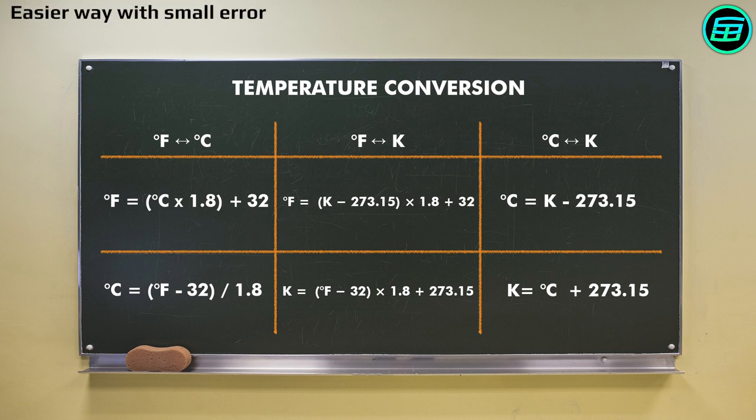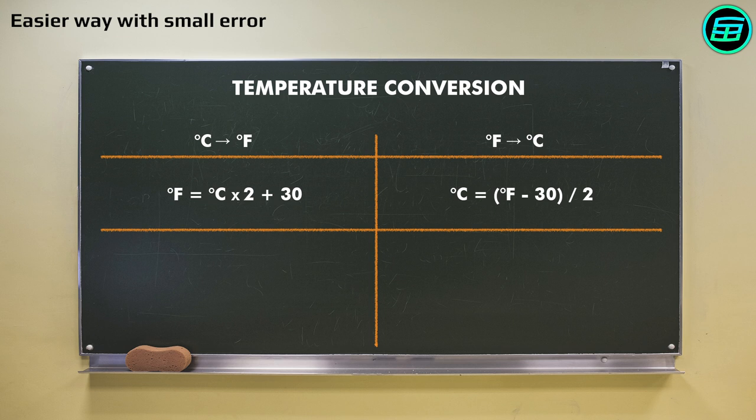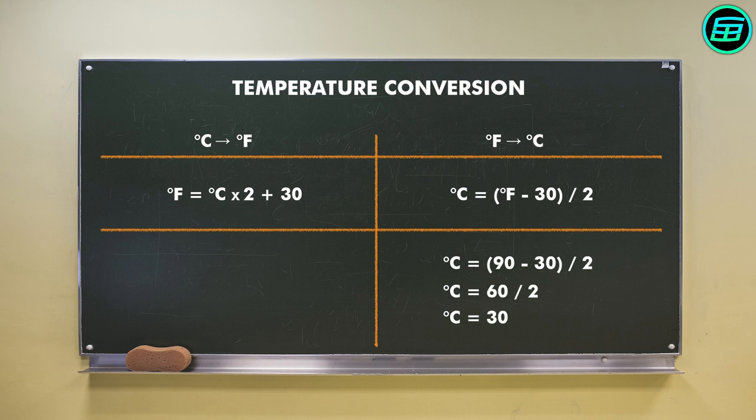There's also a simple and reasonably accurate way of converting Fahrenheit to Celsius without doing complicated calculations. For example, suppose we want to convert 90 Fahrenheit into Celsius. All we need to do is subtract 30 from 90 and halve the result to obtain 30 Celsius. The actual answer is 32.22 Celsius, only 2.2 degrees different.